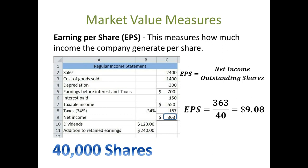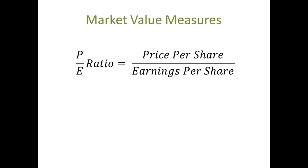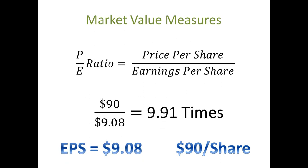Now we can use the earnings per share to calculate the P/E ratio, which is the price-earnings ratio. The P/E ratio is defined as price per share divided by earnings per share. Our price for our stock is $90, and our earnings per share is $9.08. Therefore, our P/E ratio is 9.91 times.